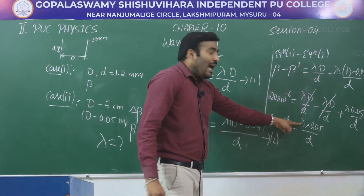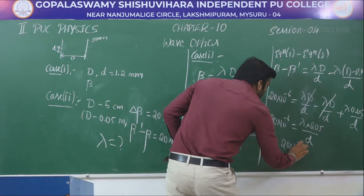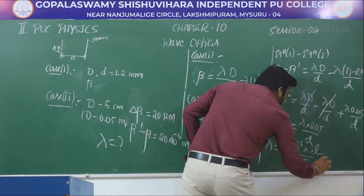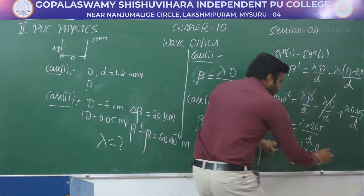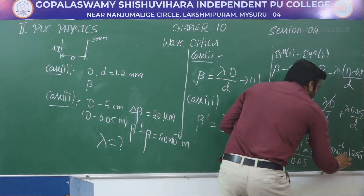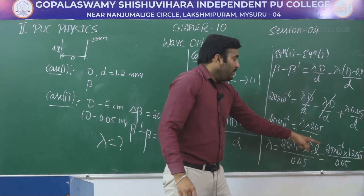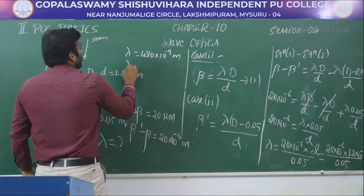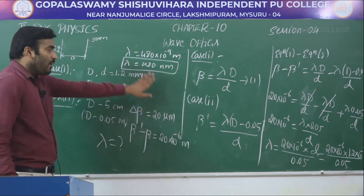Solving for lambda: lambda = 20 × 10⁻⁶ × d / 0.05. Substituting d = 1.2 millimeter = 1.2 × 10⁻³: lambda = (20 × 10⁻⁶ × 1.2 × 10⁻³) / 0.05 = 480 × 10⁻⁹ meter = 480 nanometer. So the wavelength of light used is 480 nanometer.